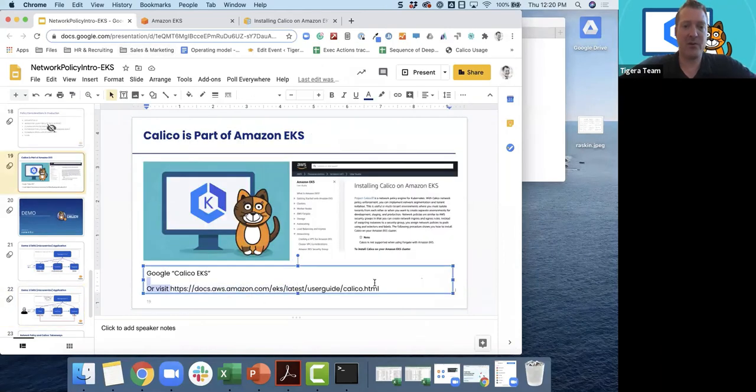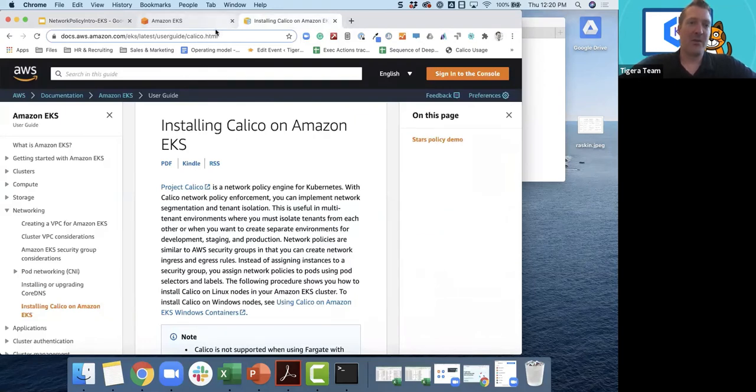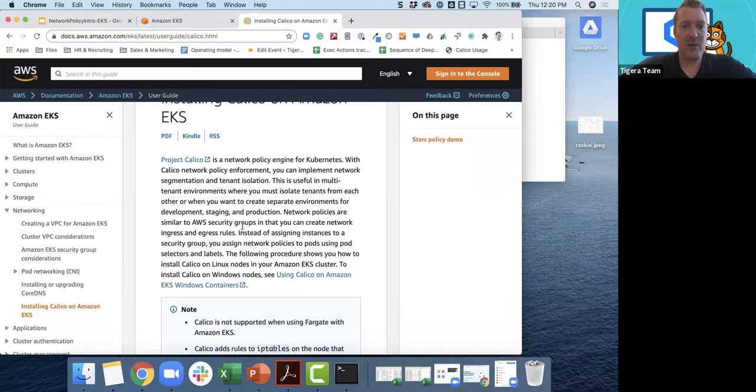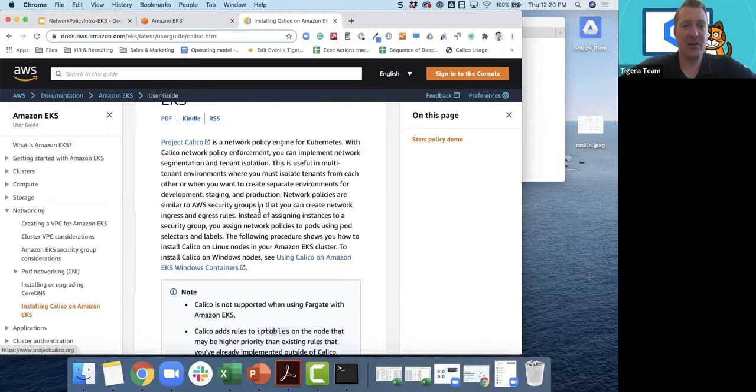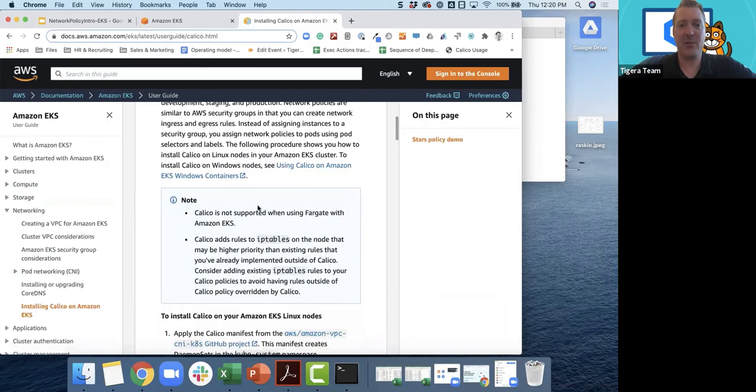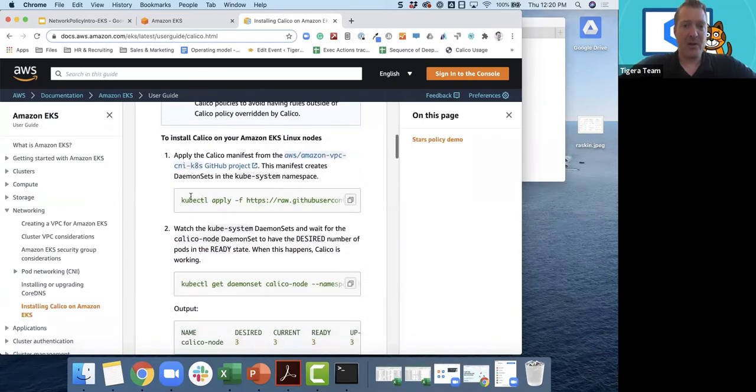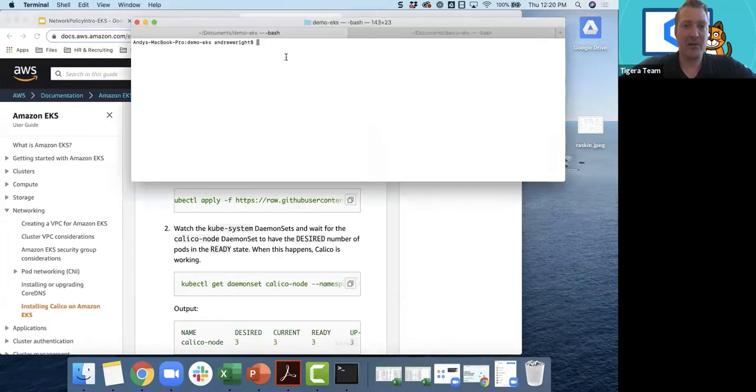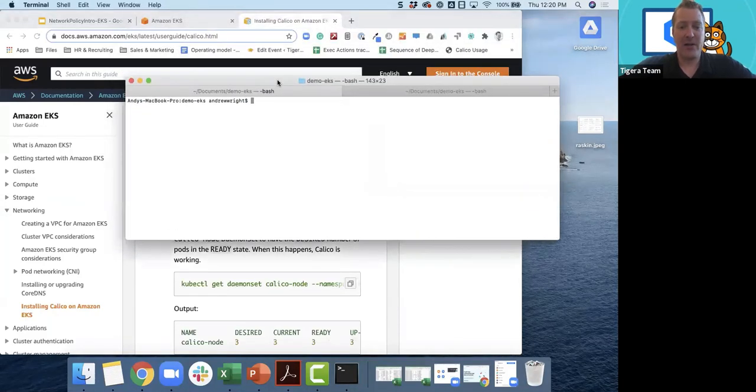So I'm going to grab that link. You could just do a Google search for Calico EKS and you'll probably find the same link as well. It looks like it's already open right here. This is right in the EKS documentation. What it will do is walk you through how to install Calico on EKS. Basically it's a couple of commands to make sure that it gets enabled. They list the commands here, and what we're going to do is first we're going to apply this manifest, which is going to install Calico on the cluster.